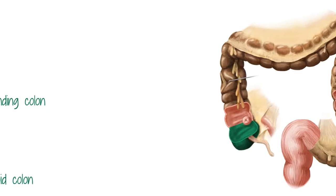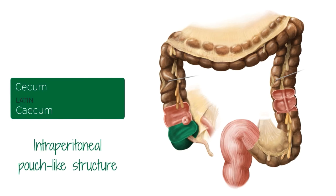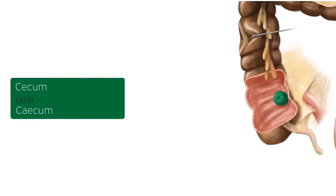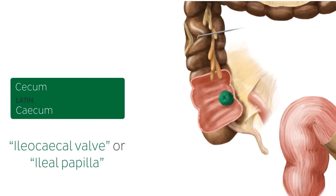The first part of the large intestine we'll talk about is the cecum. This is an intraperitoneal pouch-like structure that is about 7.5 cm in diameter. It is usually in contact with the anterior abdominal wall and sometimes may cross the pelvic brim to lie in the true pelvis. In the superior border of the cecum, we can see this invagination known as the ileocecal valve or the ileo-papilla. This structure is located just at the opening between the small and large intestine, and it prevents reflux from the cecum to the ileum while regulating the passage of contents from the ileum to the cecum.